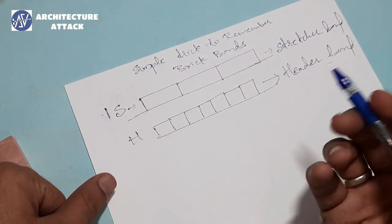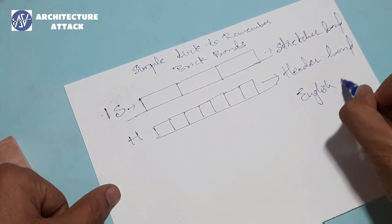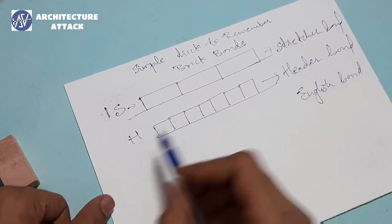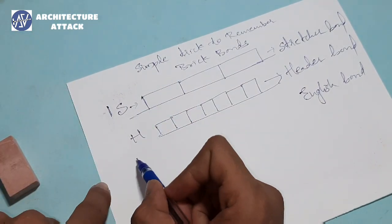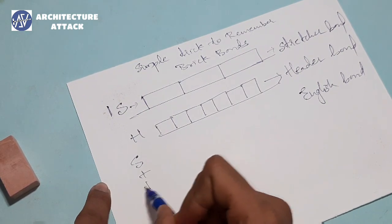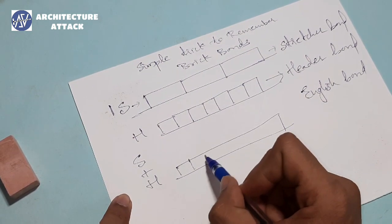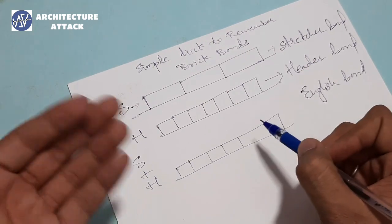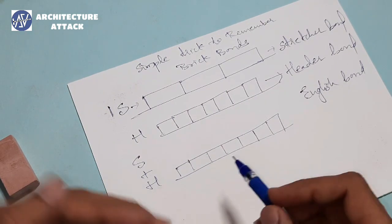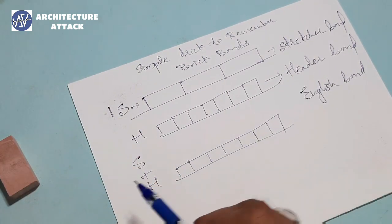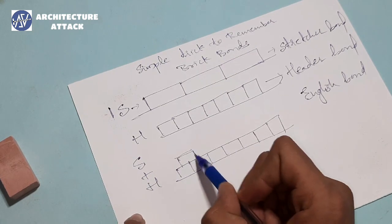What is English bond? E-N-G-L-I-S-H, English bond. English bond is nothing but the combination of these two bonds — stretcher plus header. If we are seeing alternate layers, one layer of headers and another layer of stretchers,